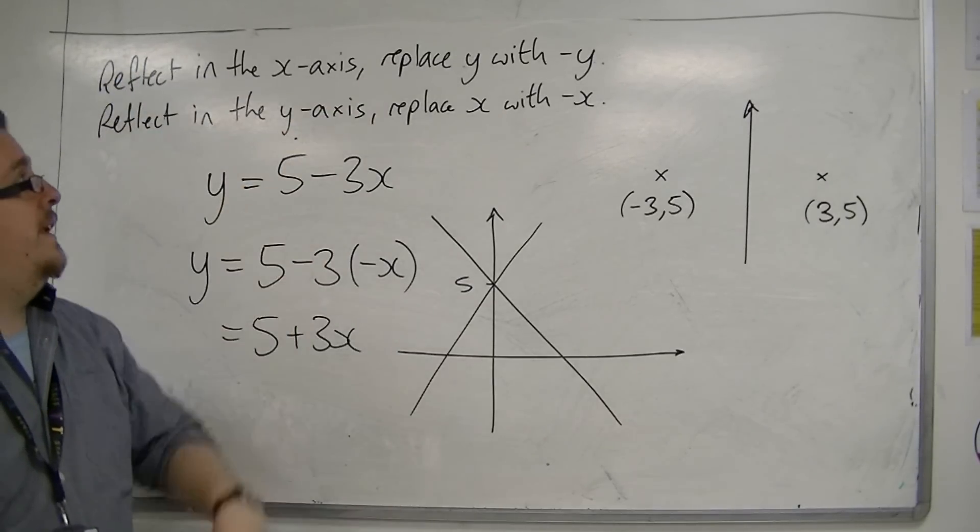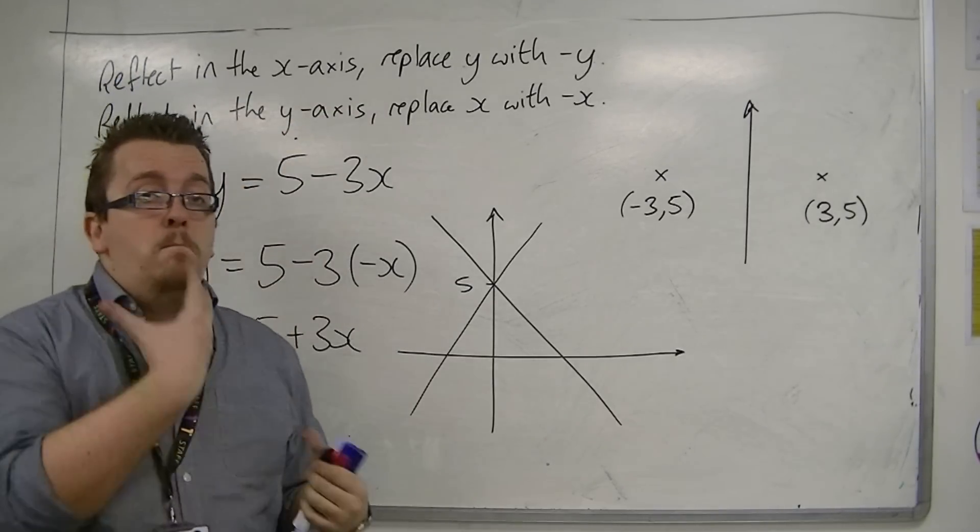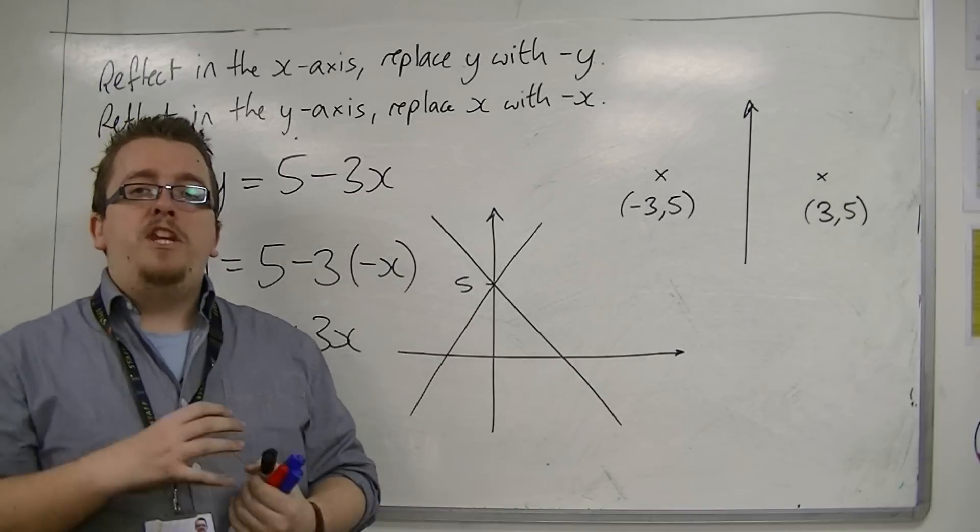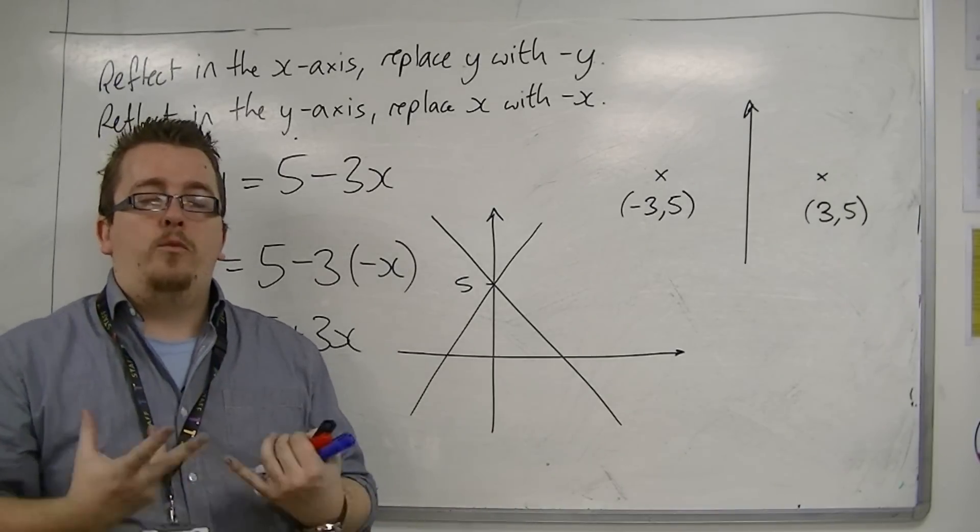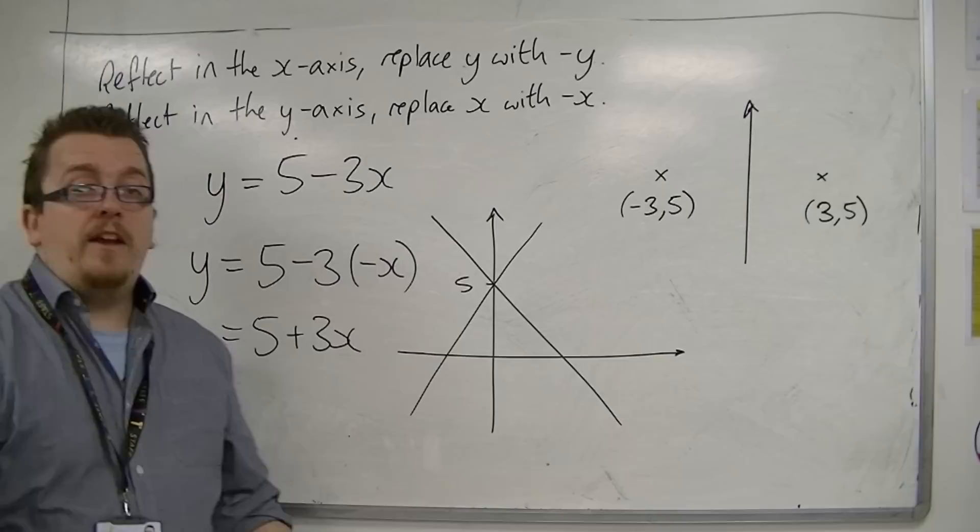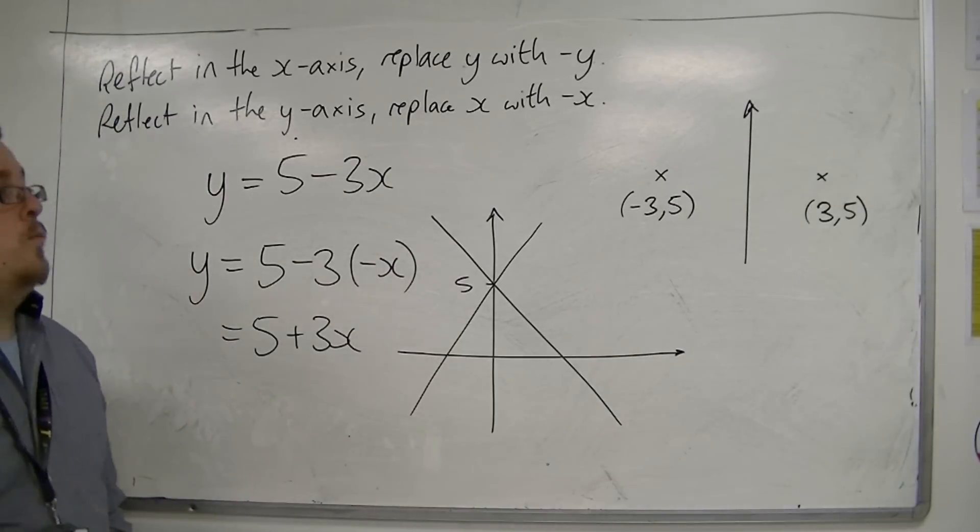And likewise, if you're reflecting in the x-axis, if you've got more than one y, then you need to replace all of those y's with -y. And that's how we can reflect in both the x-axis and y-axis.